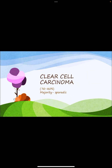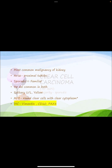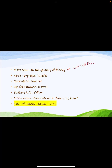Now covering the histologic variants. Clear cell carcinoma is the most common renal cell carcinoma. The majority of cases are sporadic; only four percent are hereditary. It arises from the proximal convoluted tubule. The 3p deletion involving the VHL gene is common in both sporadic and familial varieties. Tumors are usually solitary and unilateral, yellow on gross examination.